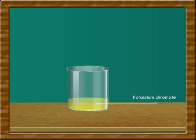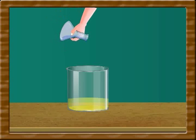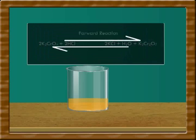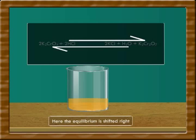Potassium chromate solution is yellow in color. In the presence of HCl, the color turns to orange. Then, add excess HCl. The reaction mixture turns deep orange, indicating the increase of rate of forward reaction. Here, the equilibrium is shifted right.